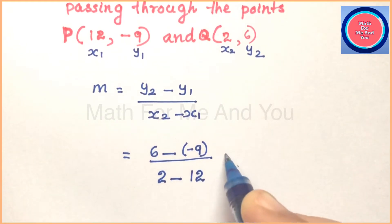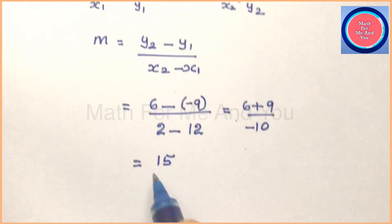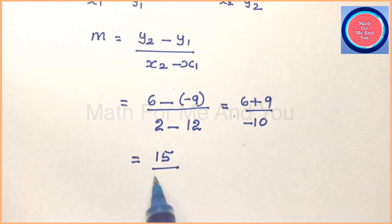6 minus minus 9, two negatives together make positive, 6 plus 9 over 2 minus 12 is minus 10. What is 6 plus 9? It is 15. 15 over minus 10. If there is numerator denominator with a common factor, we can cancel the common factor. Here we can cancel by 5. 5 times 3, 5 times 2. So we get the result or slope is equal to negative 3 over 2.